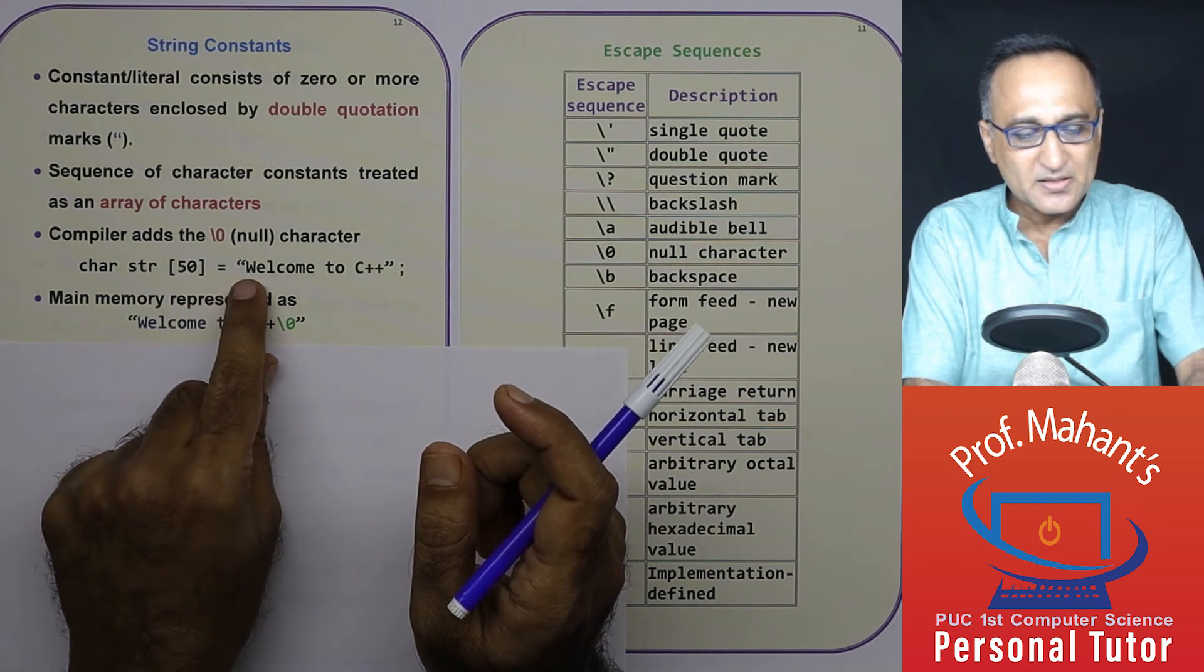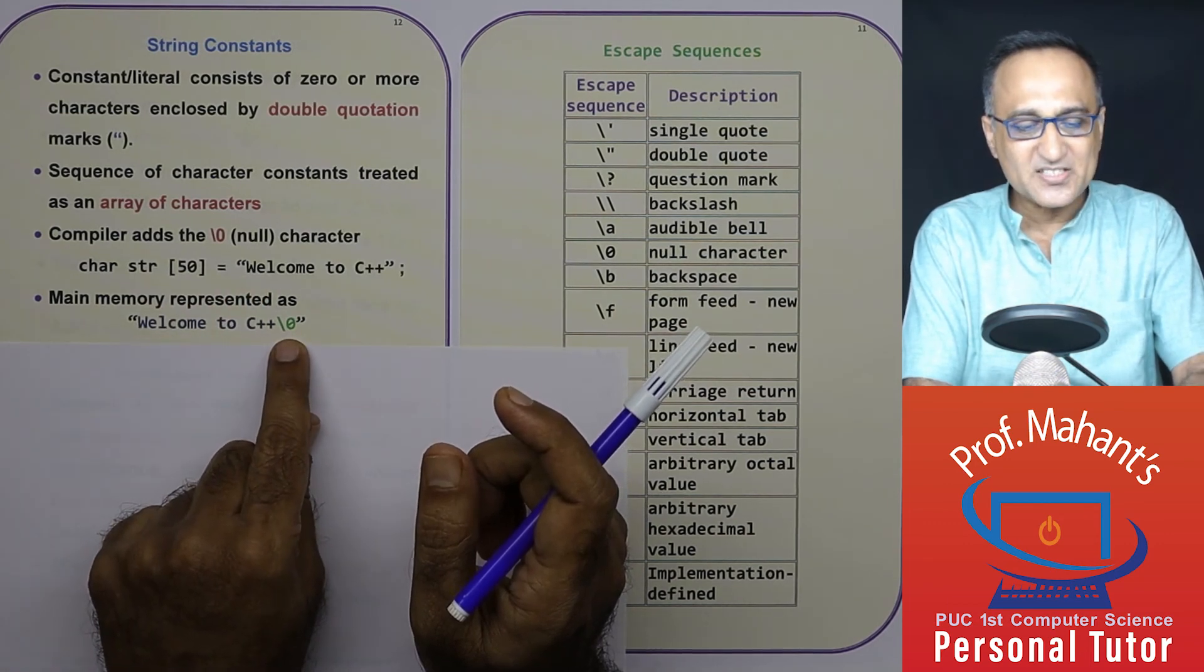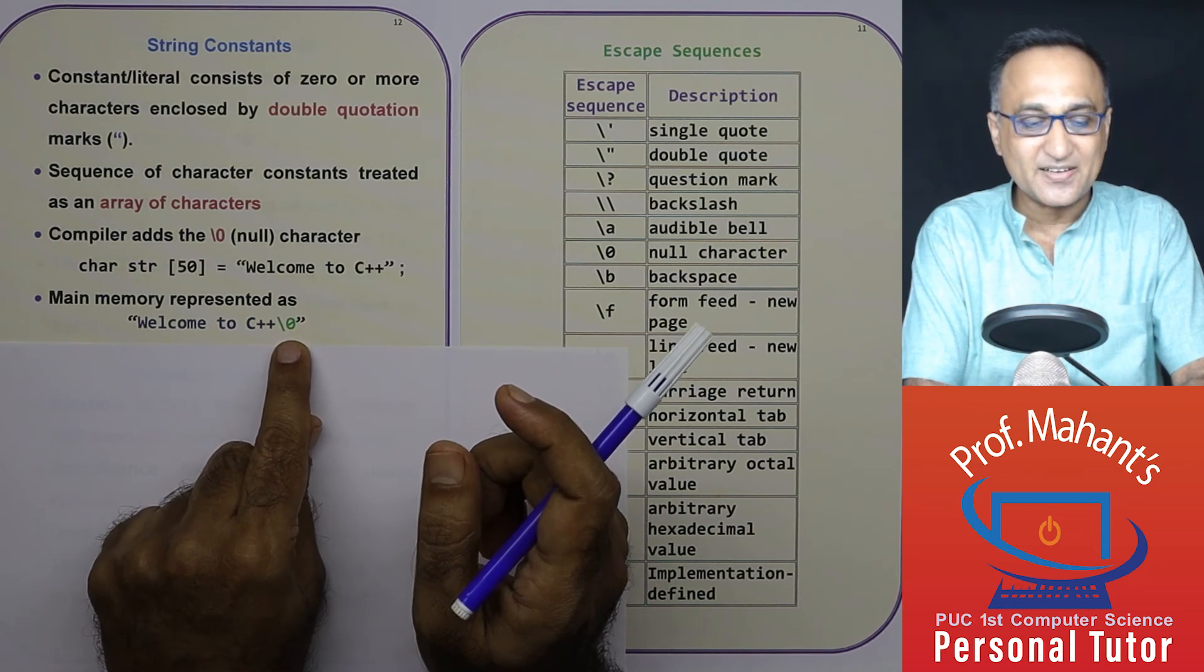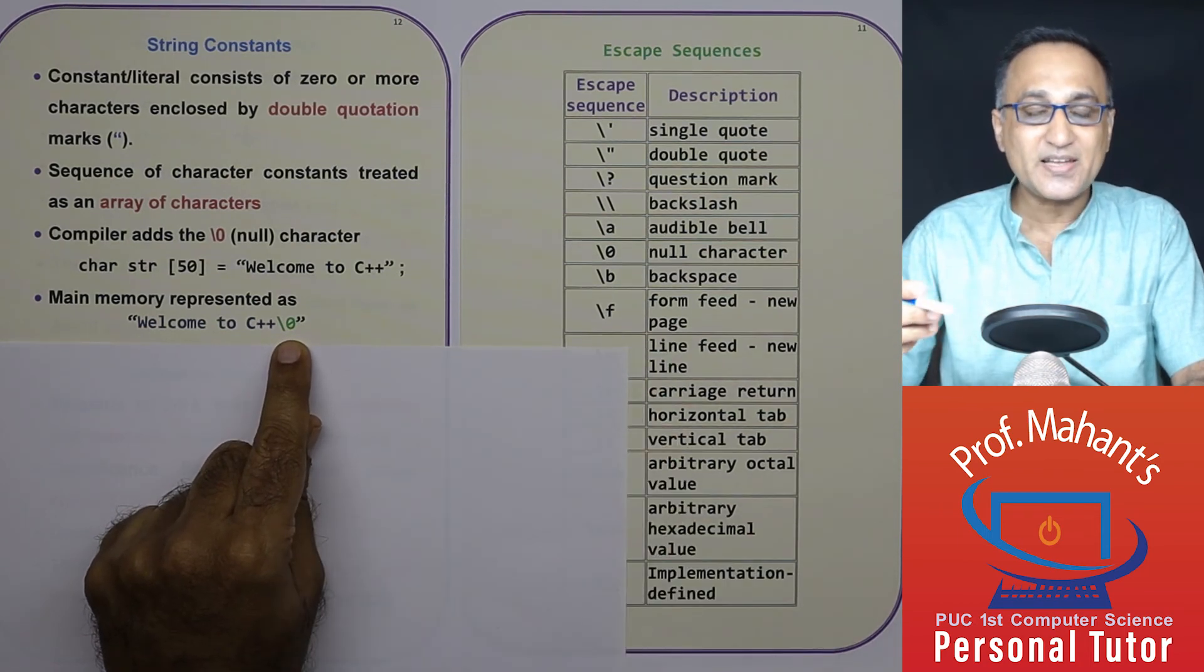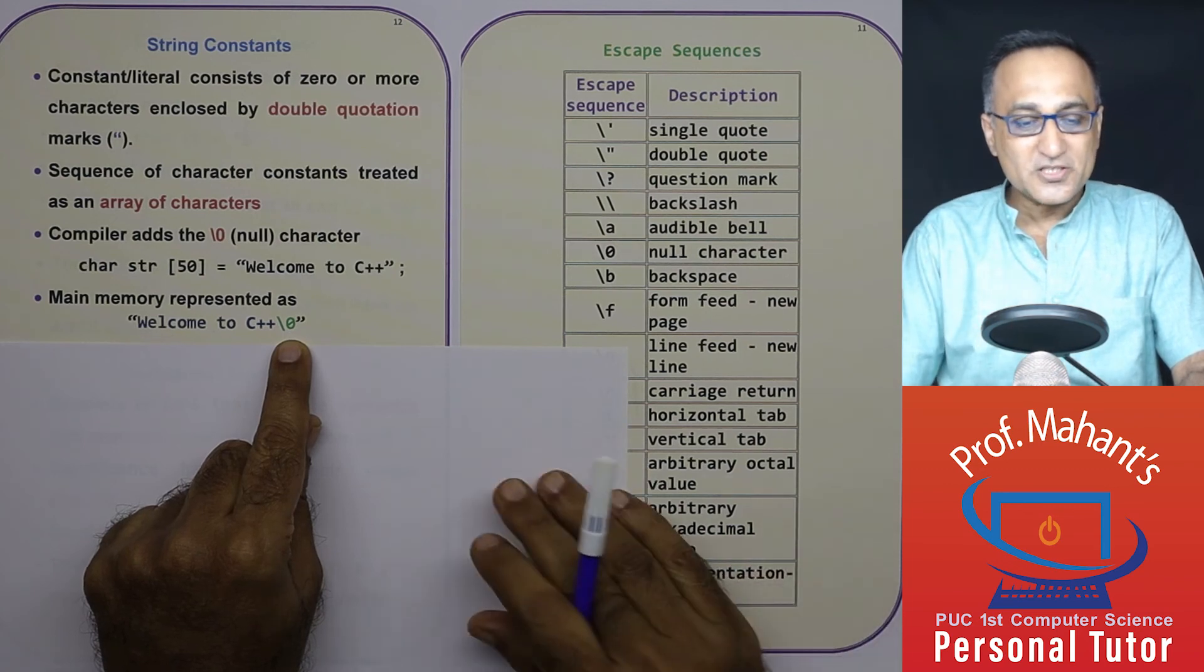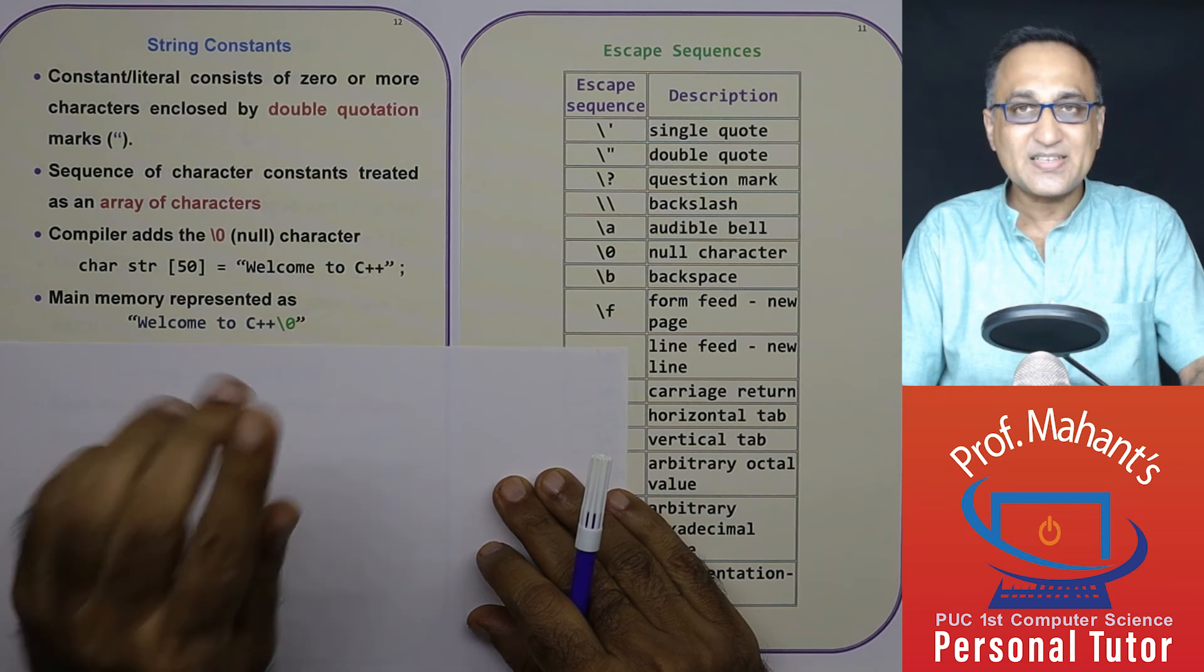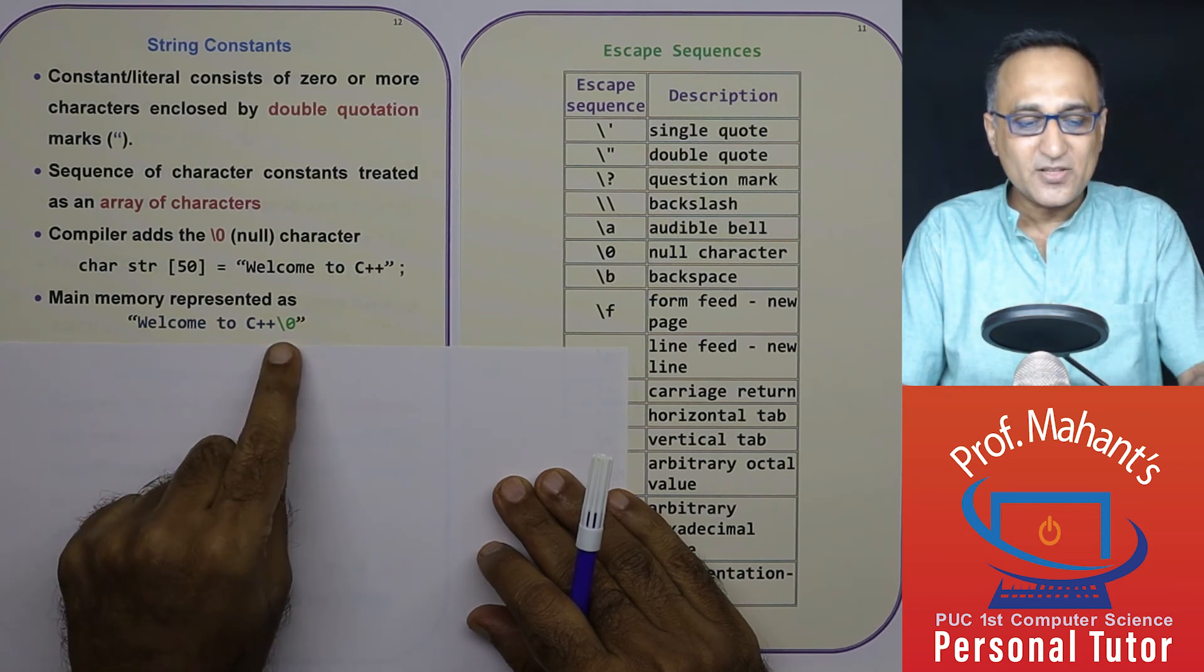All these are examples of single character constants. In main memory, this particular fellow is stored like this. This backslash zero is nothing but the null character. Why do we use the null character? Or why does the compiler use the null character? Because it should know that after C++, after the last plus, the string has ended.